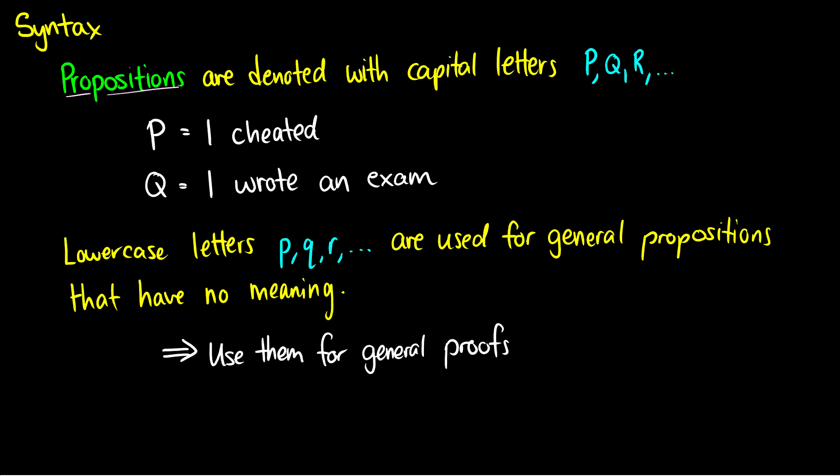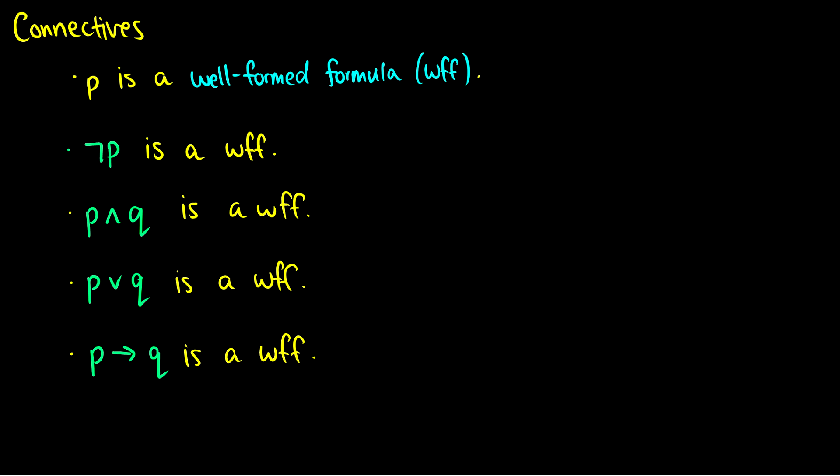Now, with all of these different propositions, we can use connectives to change their meaning or combine their meanings together. So the first thing I want to say is that a statement or proposition on its own is a well-formed formula, also known as a WFF or a woof, which means that it is okay in our syntax. The second statement says that not P is a woof. So if P is a woof, then not P is a woof. And this not just means negation. So this little half of a box is just not.